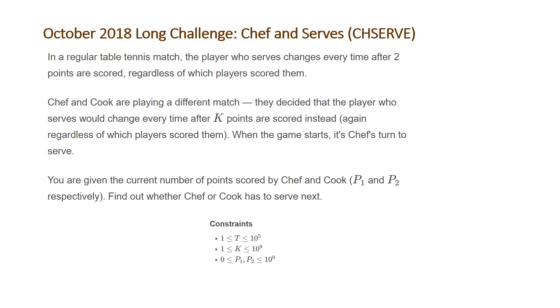The constraints for this problem are: T, the number of test cases, is between 1 and 10^5; K, the number of points between alternating serves, is between 1 and 10^9; and P1 and P2 will each be between 0 and 10^9.